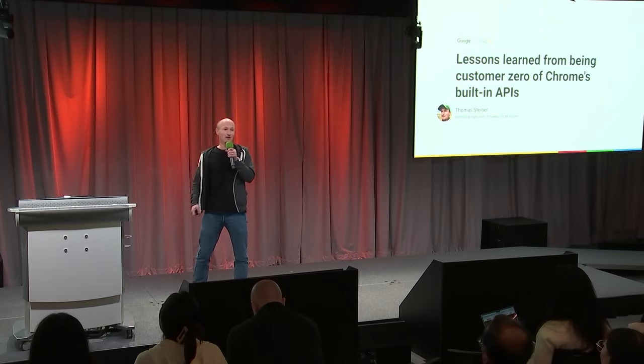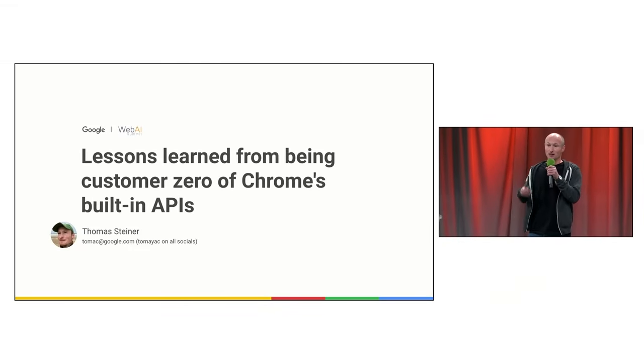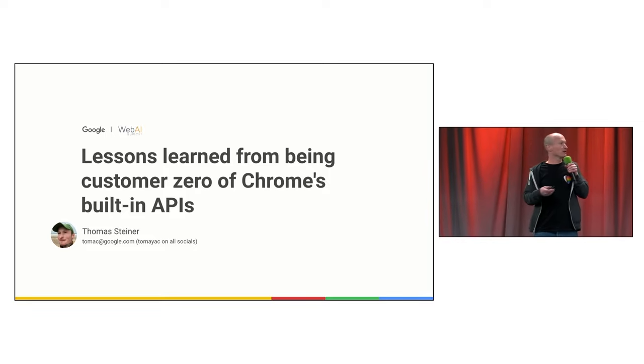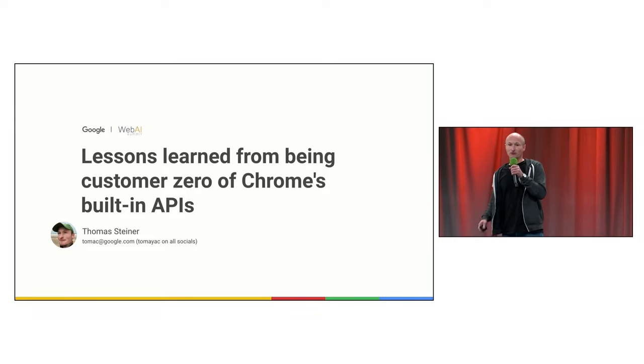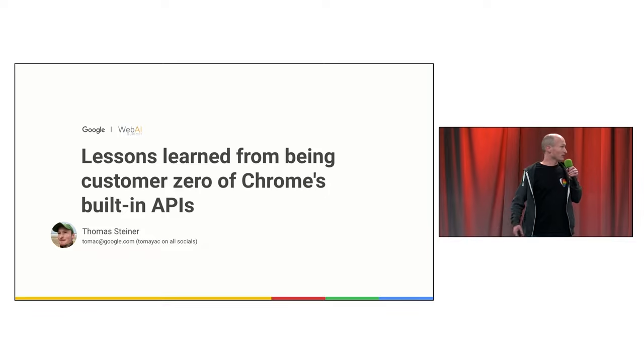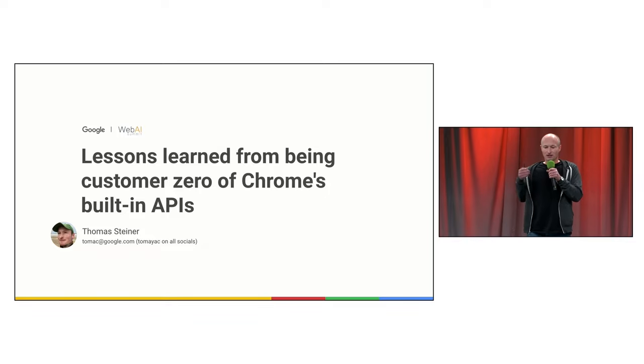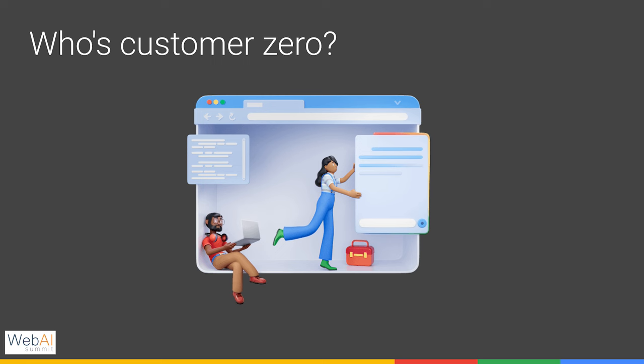Now that you've seen all these amazing APIs from Kenji's talk, I want to provide some insights into the lessons we've learned building with these APIs as customer zero. My name is Thomas Steiner, I work in Chrome Developer Relations, and I go by Tomajak on all of the socials.